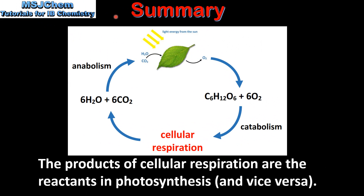Let's end with a summary. Starting with photosynthesis, which is an anabolic process in which the reactants are water and carbon dioxide and the products are glucose and oxygen. The products of photosynthesis form the reactants for cellular respiration, which is a catabolic process.